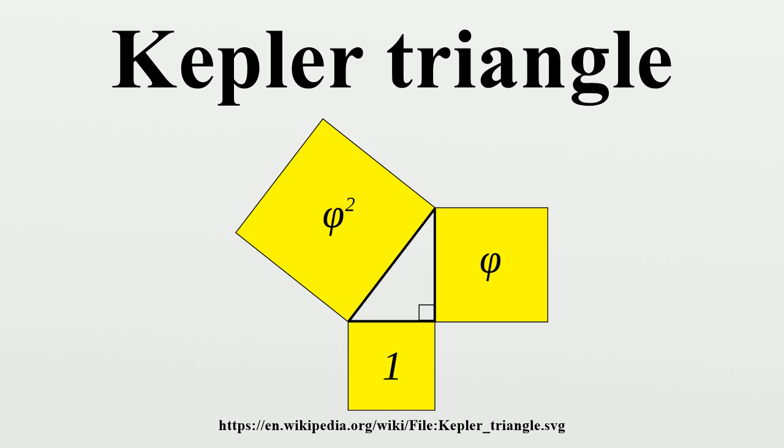Use that line as the radius to draw an arc that defines the height of the rectangle. Complete the golden rectangle. Use the longer side of the golden rectangle to draw an arc that intersects the opposite side of the rectangle and defines the hypotenuse of the Kepler triangle.